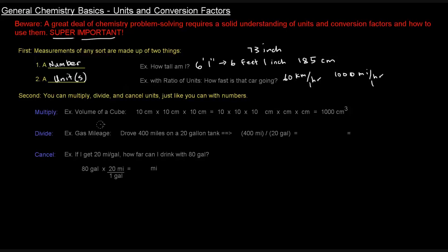We can also divide units. For instance, like in gas mileage, let's say you drove 400 miles on a 20 gallon tank. How many miles did you get per gallon? You take the 400 miles and divide it by 20 gallons. You divide those numbers and divide the units as well. You get 20 miles per gallon, which you can express as MPG.